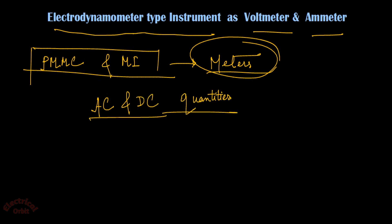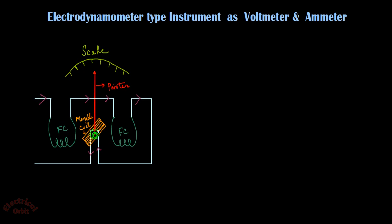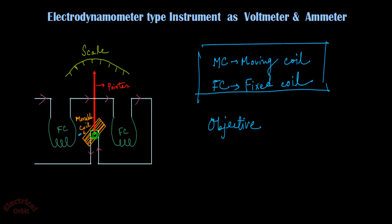Before using this electrodynamometer type instrument as voltmeter and ammeter, we need to understand the mechanism by which it works. This is a schematic diagram of an electrodynamometer type instrument. There are multiple things in this diagram: one is a moving coil (MC), another is two fixed coils (FC). What is our objective? Our objective is to